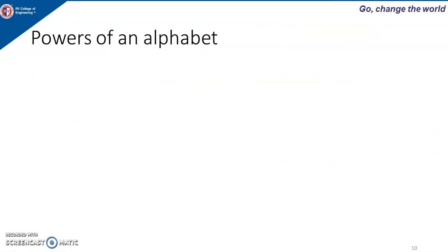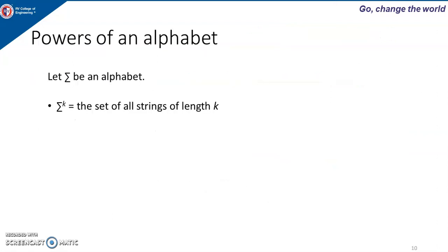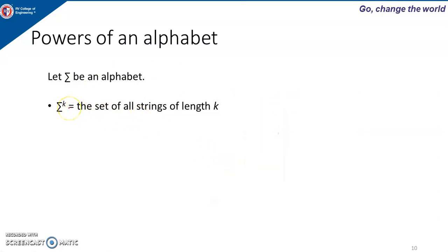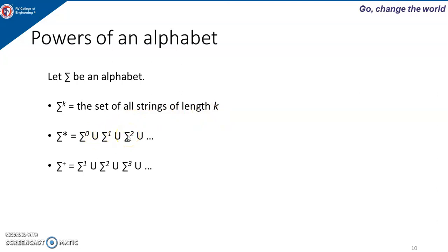Next is the power of an alphabet. If sigma is an alphabet, then sigma to the power k is the set of all strings of length k. Sigma star is the union of sigma 0, sigma 1, sigma 2, and so on. Sigma plus is the set of strings of all lengths excluding 0 — that is, excluding the empty string.